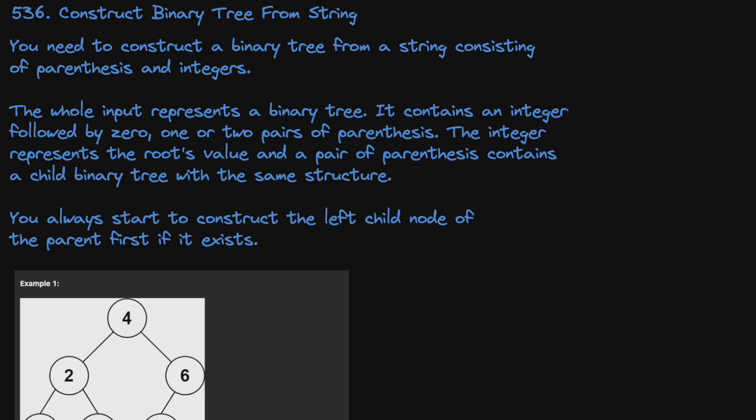You need to construct a binary tree from a string consisting of parentheses and integers. The whole input represents a binary tree. It consists of an integer followed by 0, 1, or 2 pairs of parentheses. The integer represents the root's value, and a pair of parentheses contains a child binary tree with the same structure. You always start to construct the left child node of the parent first, if it exists.